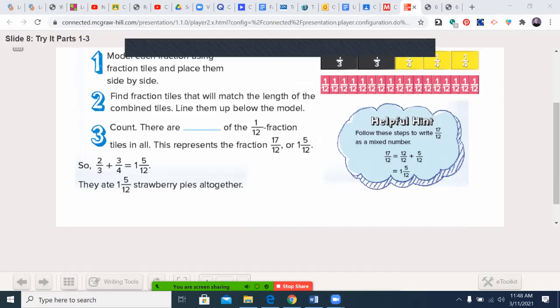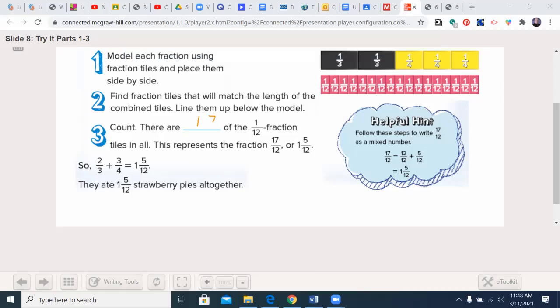And I count them. One, two, three, four, five, six, seven, eight, nine, ten, eleven, twelve, thirteen, fourteen, fifteen, sixteen, and seventeen of the one-twelfths. This represents the fraction seventeen over twelve, which is one and five-twelfths, because twelve goes into seventeen one time. That's that. There's a remainder of five right there. The denominator stays the same. And that's simplified, so my answer is one and five-twelfths.